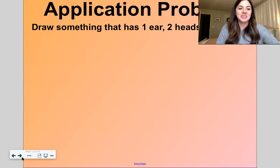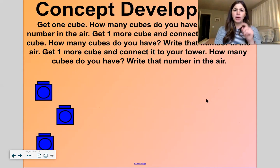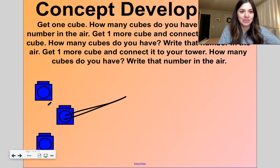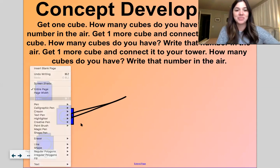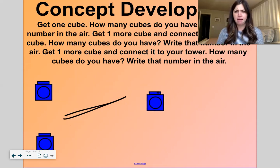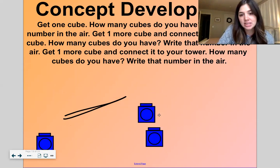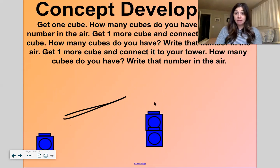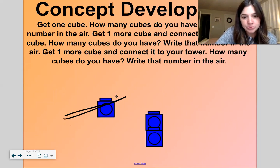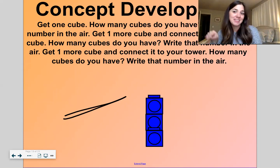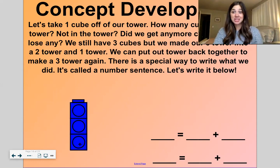All right. Let's get into our concept development now. Okay. Let's get a cube. Well, that's silly. I got to click my select. Oops. I got to click my select button here. There we go. Get one cube. Okay. Over here. How many cubes do I have? Just one. Write that number in the air. One. Okay. Let's get one more cube and connect it to this first one we got. How many cubes do I have now? Two. Write that one in the air. Now let's get one more and let's connect that. How many cubes do I have now? Three. Around the tree, around the tree. That's how we make a number three. Good. Okay. Now we have our completed tower here and it looks so good.